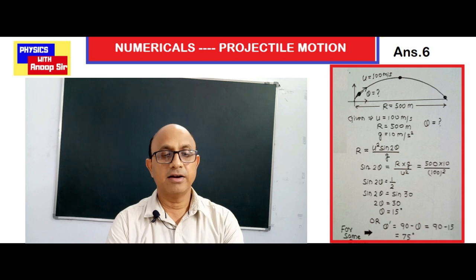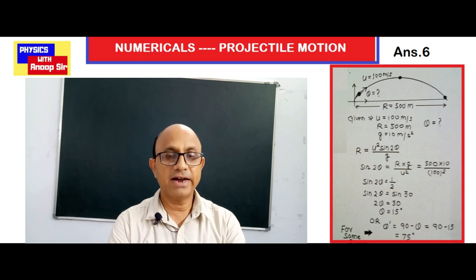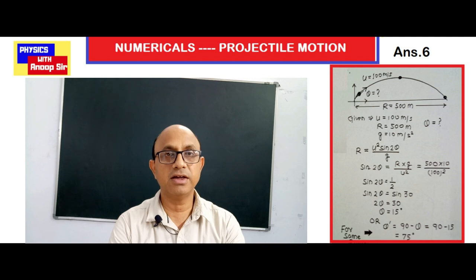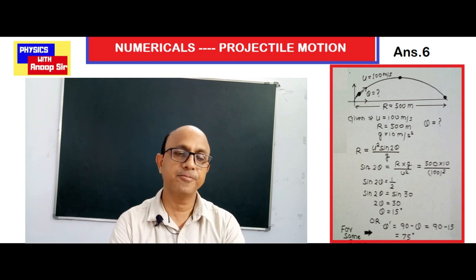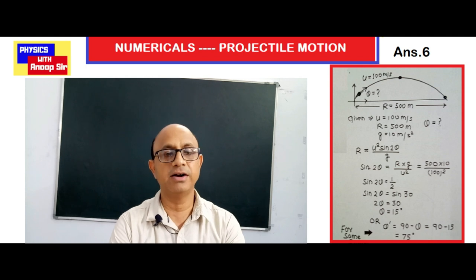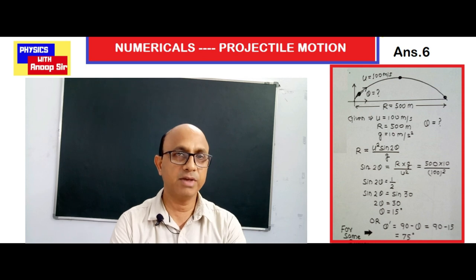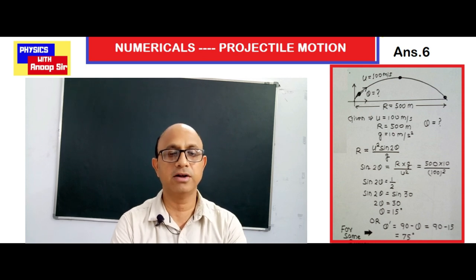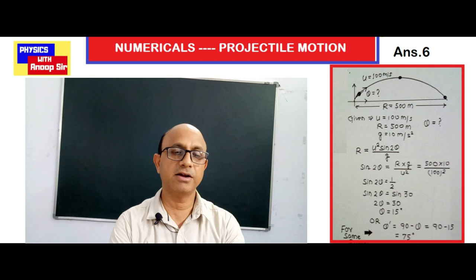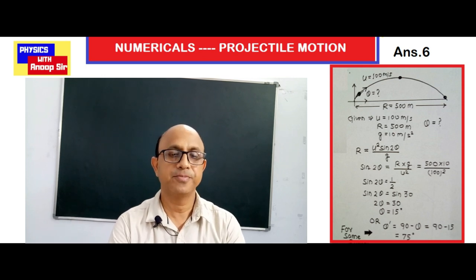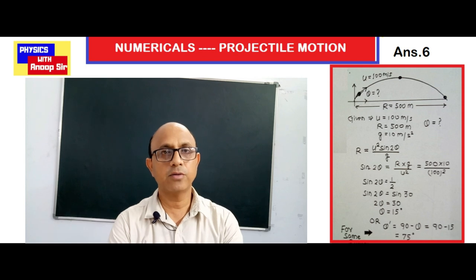In this question, a cannon was fired and the projectile is launched at 100 meter per second velocity at a certain angle, and it lands at 500 meters distance — meaning its range is 500 meters. As you can see in the diagram, velocity is given as 100 meter per second making an angle theta from the horizontal, and range is 500 meters.